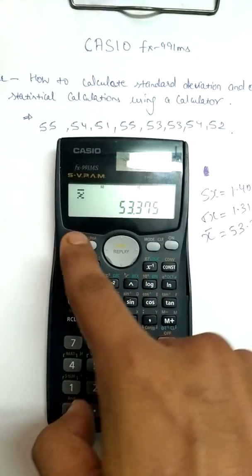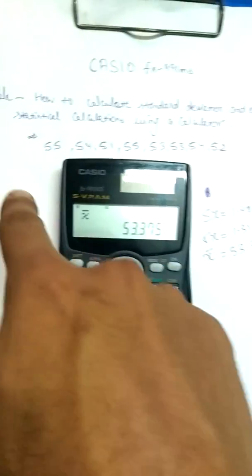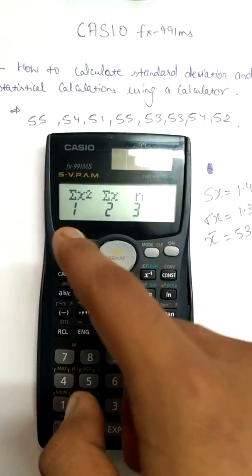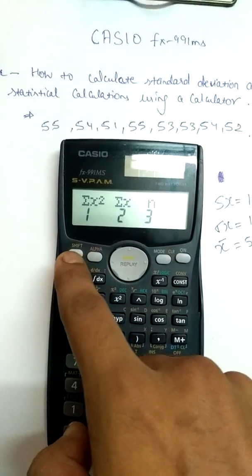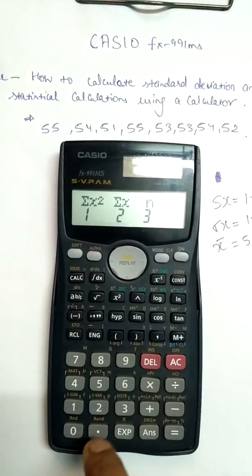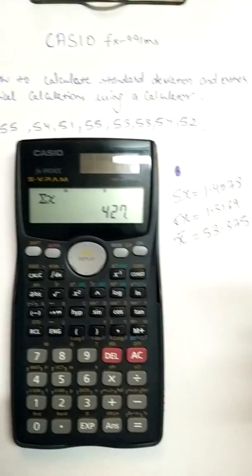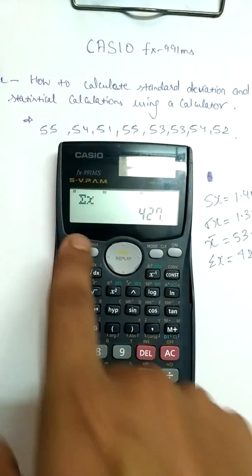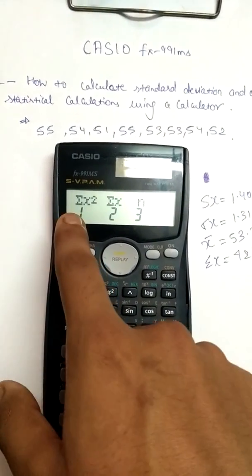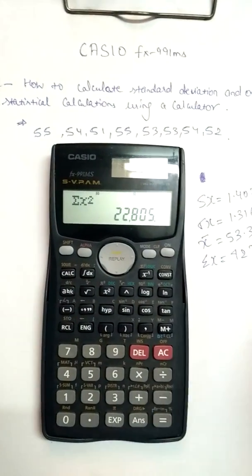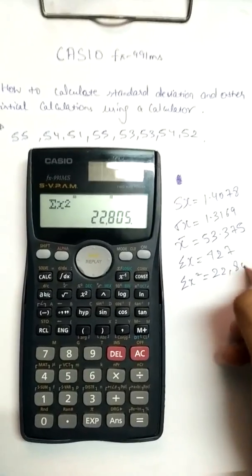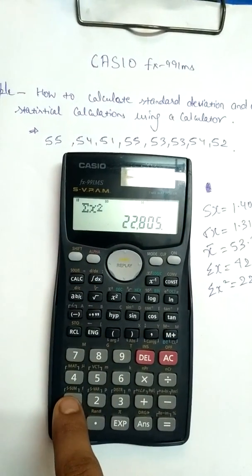Now I want to find the sum of all these numbers. For the sum and square of sum I have to press SHIFT and then 1, instead of SHIFT and 2 which I was using before. For the sum of squares I'll press 2 and equals. Then for the sum I'll press 1 and equals, and the sum comes out as 22805.